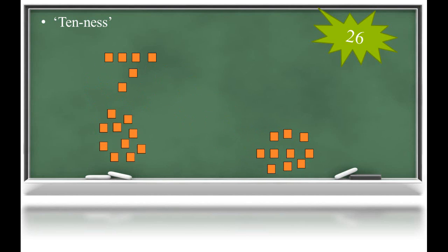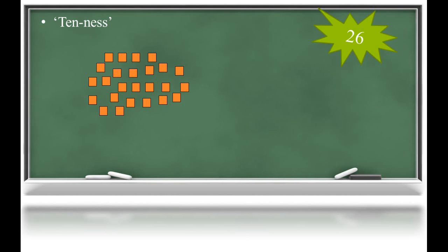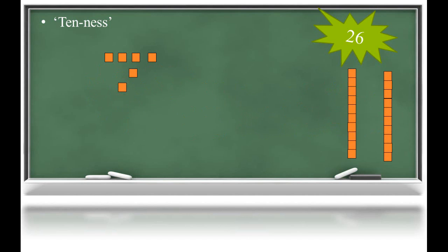So here we have ten, ten more, and six ones. Once students are comfortable making groups of ten, they will begin to replace the groups of ten with what's called a rod or a pre-grouped unit of ten. Here we see two ten rods and six ones, which represents the number 26.